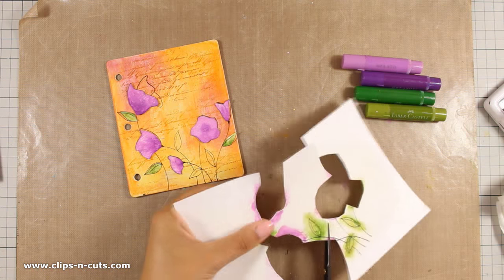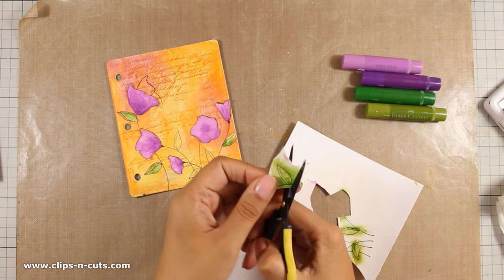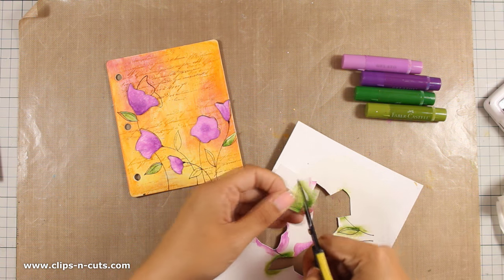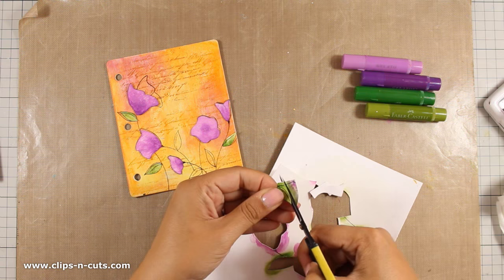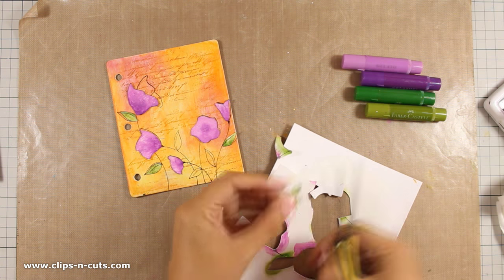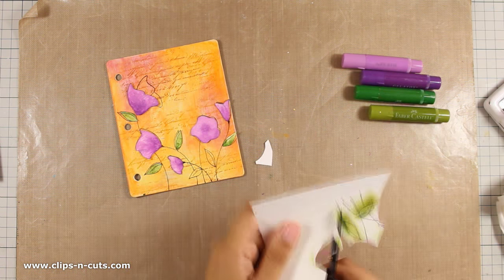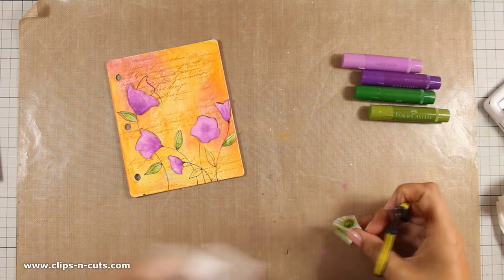Now everything is dry and I'm using my scissors to cut out all the leaves and the flowers, and I'm just placing them on my page. I haven't stuck down anything yet, but I just want to make sure that I know where everything is going.